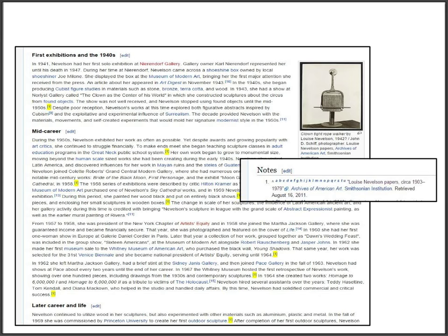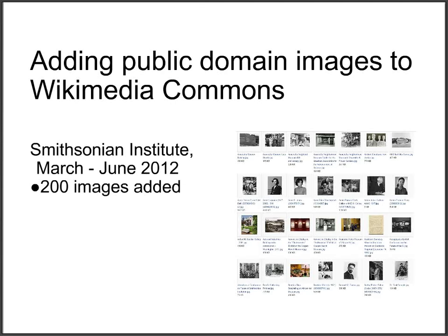Another way that memory institutions can contribute is to share public domain images to the Wikimedia Commons site. This slide shows some of the images which were added by the Smithsonian Institute in 2012. These images are then available for use across all of the Wikipedia sites, and more widely across the web.